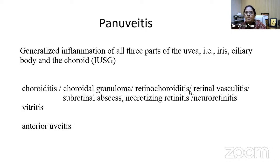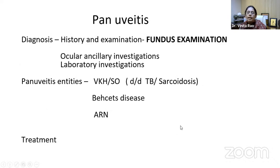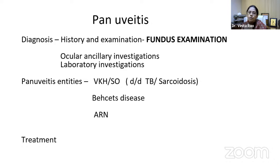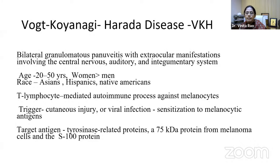Good fundus examination is critical in pan uveitis as it provides clues to the diagnosis and helps differentiate pan uveitis from anterior uveitis. VKH disease is a bilateral granulomatous pan uveitis with extraocular manifestations involving the central nervous system and integumentary system. Early VKH presents with exudative retinal detachment — focal, multifocal, or bullous — with disc hyperemia and edema, usually bilateral but sometimes asymmetric. Differentials include central serous retinopathy and posterior scleritis. VKH also has systemic manifestations like headache, meningismus, and tinnitus.